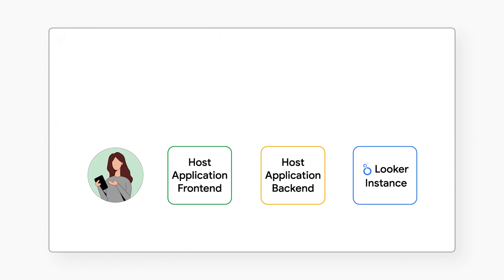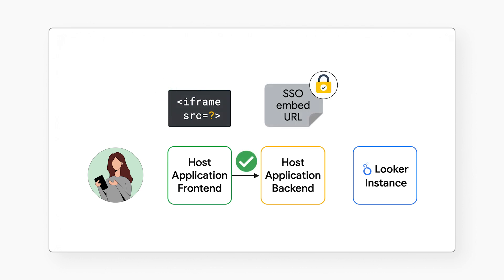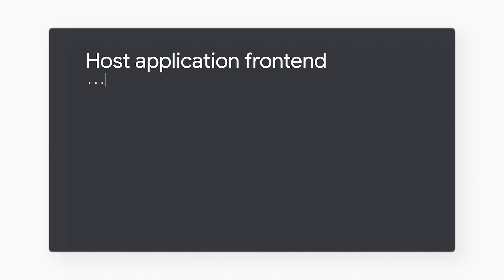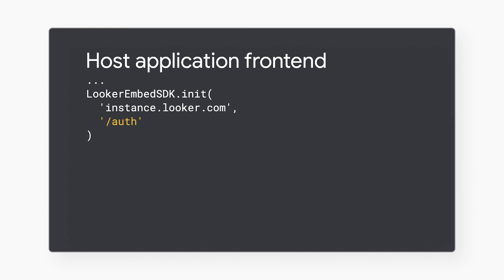Let's look at that flow again. Our Embed SDK automates the steps where your host application frontend creates the iframe, requests the SSO embed URL, and sets the URL on the iframe source. For example, let's say you want to embed a dashboard. You initialize the Embed SDK with your Looker instance's domain and your backend's endpoint that returns the SSO embed URL.